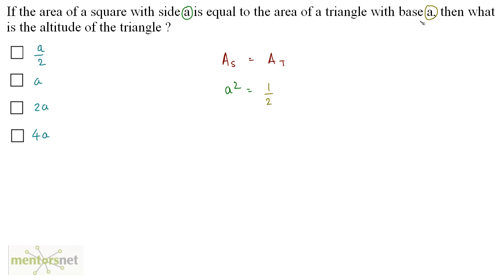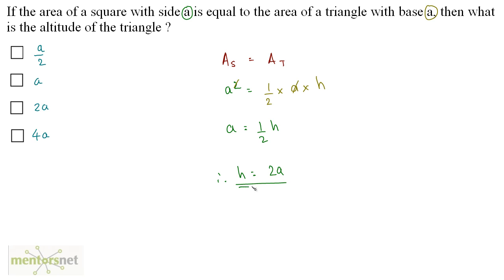We have been given the base as A, so it is half times A times h, where h is the altitude of the triangle. This A and one A cancel out, leaving A = ½h. Therefore the height is equal to twice A. So option C is the correct answer.